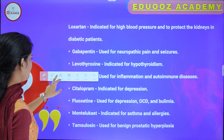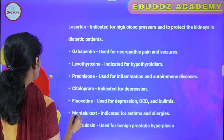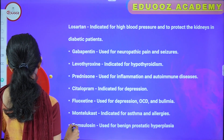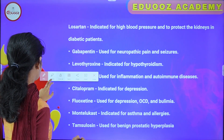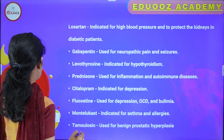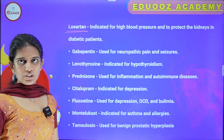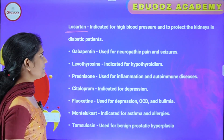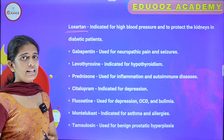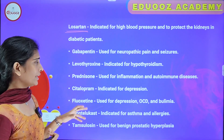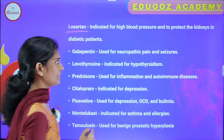Losartan is an ARB — angiotensin receptor blocker. It is indicated for high blood pressure and to protect the kidneys in diabetic patients. It protects against nephropathy — there is a condition involving diabetic nephropathy where Losartan is used to protect the kidneys.